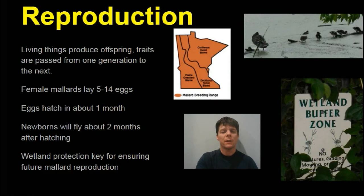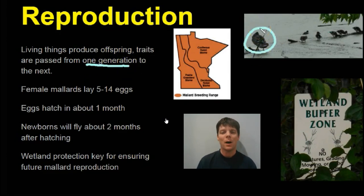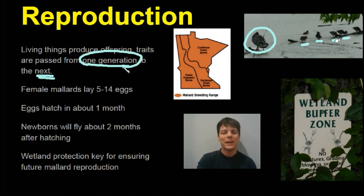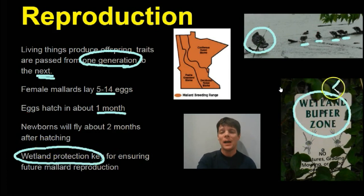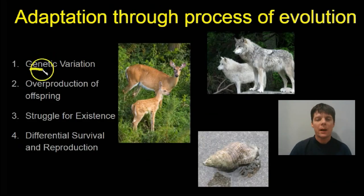The next characteristic of living things is reproduction. All living things need to reproduce. The example I've highlighted here is some mallard ducks I photographed in the pond behind my house. Reproduction means that living things produce offspring. We see the female duck here with her babies. Female mallards typically lay between 5 and 14 eggs in the late spring, they take about one month to hatch, and about two months after hatching they'll start to fly. One key for ensuring future mallard reproduction is wetland protection.